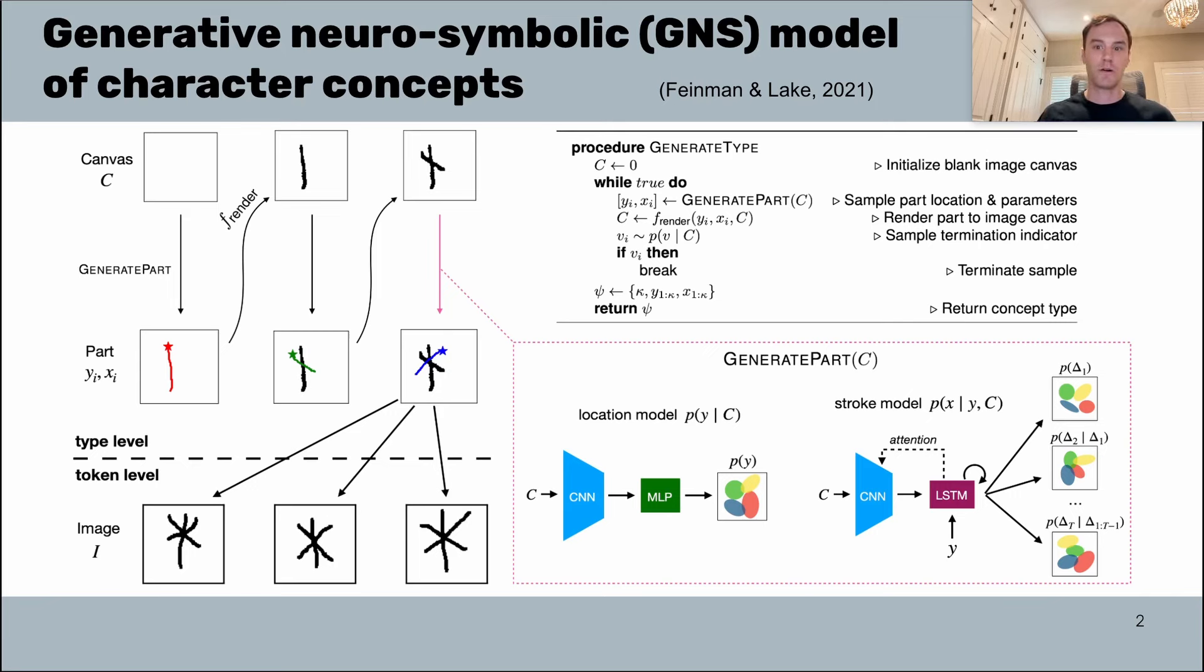In this probabilistic program, a character example is generated by iteratively sampling the next part conditioned on the current image canvas. The part samplers are parameterized by neural network subroutines, and once you've sampled from your neural networks the specification of the next part, there is a symbolic renderer which is used to translate those primitives into an updated image canvas.